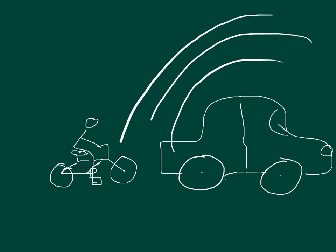Question 7 says: at rest, a car's horn sounds the note A, 440 Hz. The horn is sounded while the car is moving down the street. A bicyclist moving in the same direction with one-third the car's speed hears a frequency of 413 Hz. Part A: is the cyclist ahead of or behind the car? And part B: what is the speed of the car?